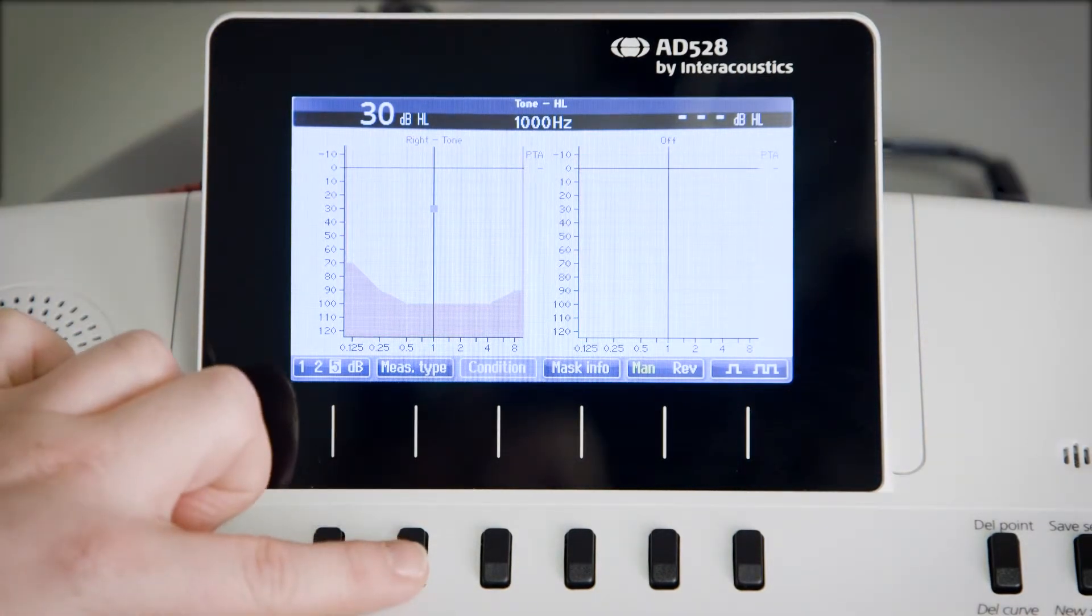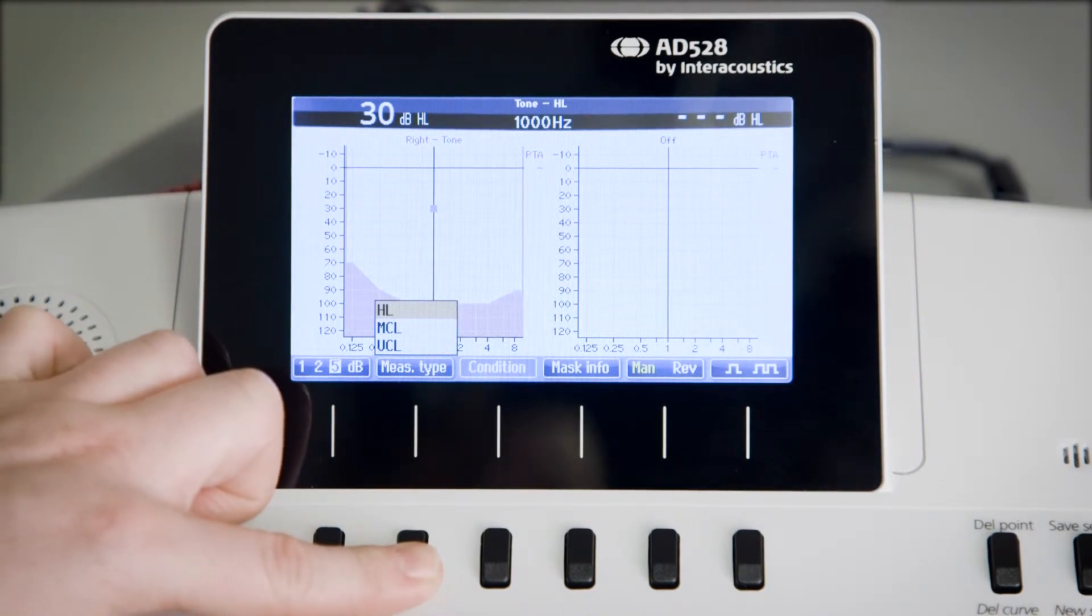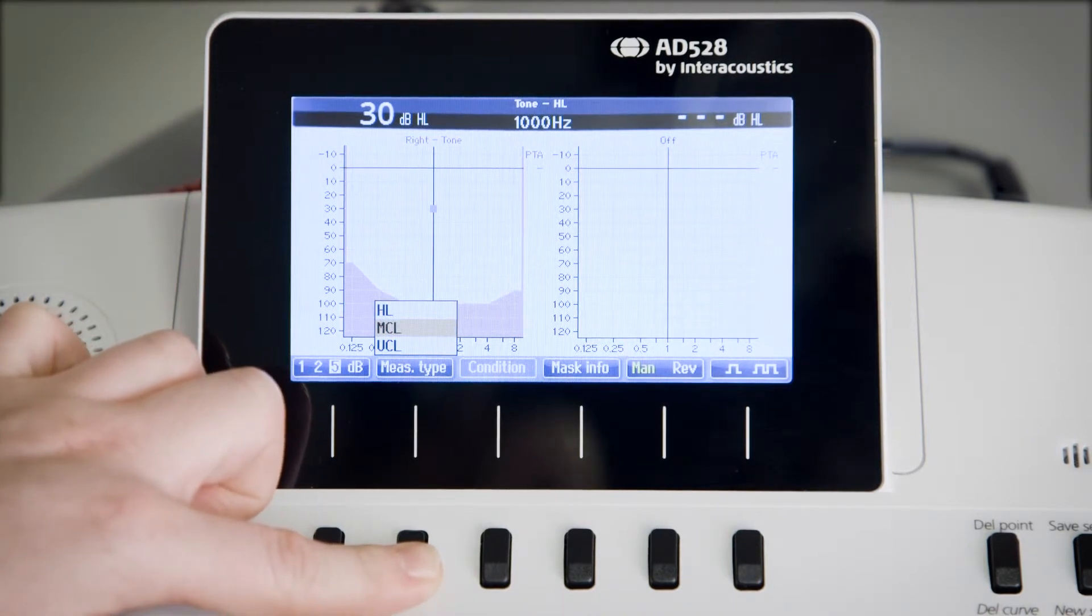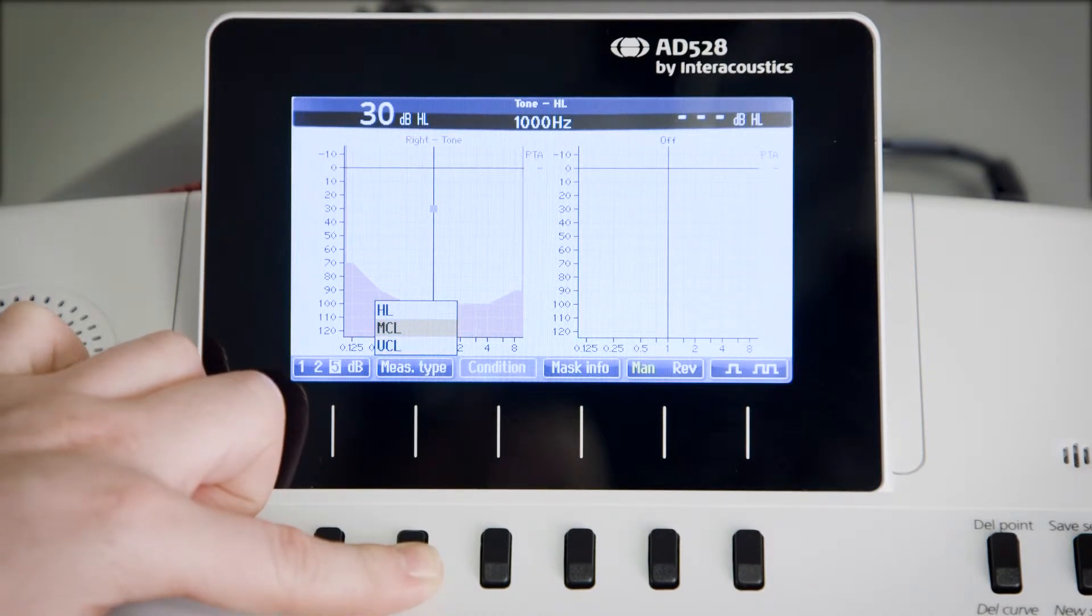The second key is our measure type, so in case we want to change to most comfortable level or maybe uncomfortable level, we can do that from here.